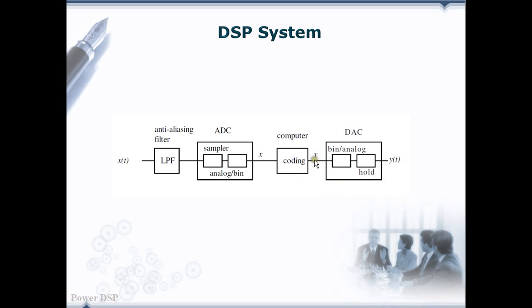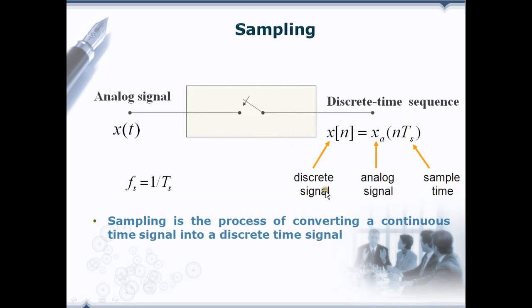The last one is a digital to analog converter which is the reverse process of ADC. Here, the digital signal is converted back to analog signal for real-world applications.